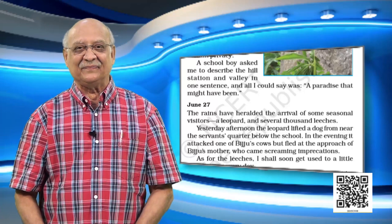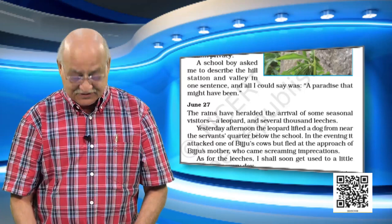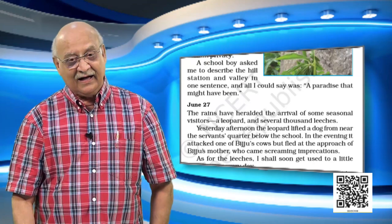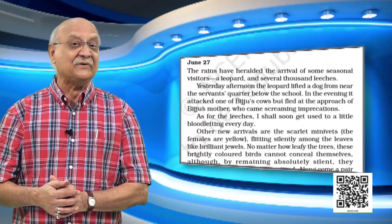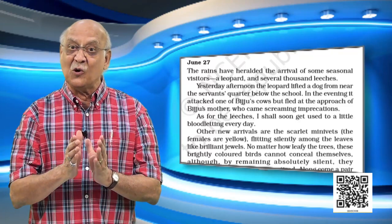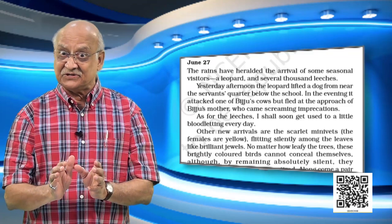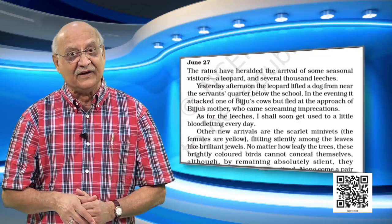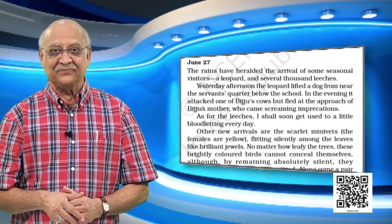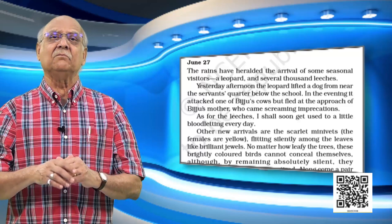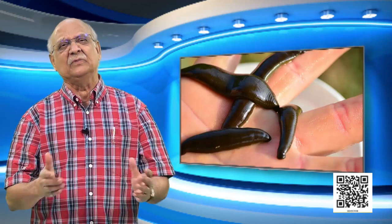We are now moving ahead to June 27th. Still rains, lots of rains, no stopping them at all. In the rain, we go into something else. In the first entry we saw the cobra lily, and now we are going to see some other visitors. Who are the visitors? Look at paragraph one on June 27th. There is a leopard on the hill, plenty of wild animals. And then there are these leeches — any number of them.